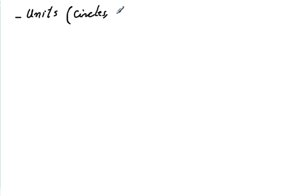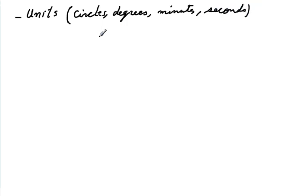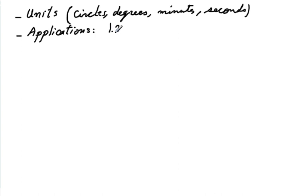Today we are going to talk about various units for measuring angles. This is not the complete discussion; we are going to have more discussion on this later on. For now, units is simply a reference to measuring angles in terms of circles, degrees, minutes, and seconds. These are units within the same system.